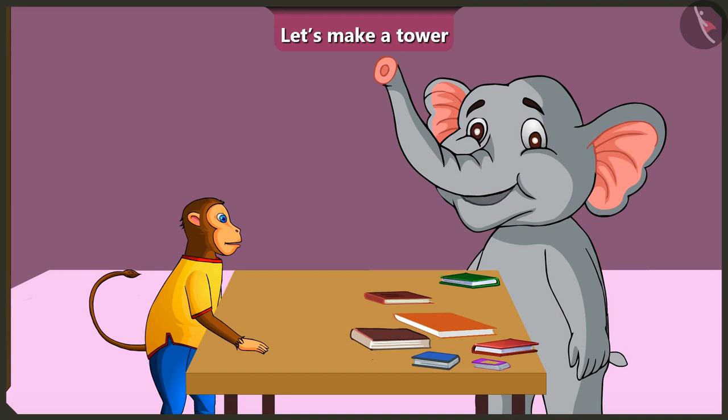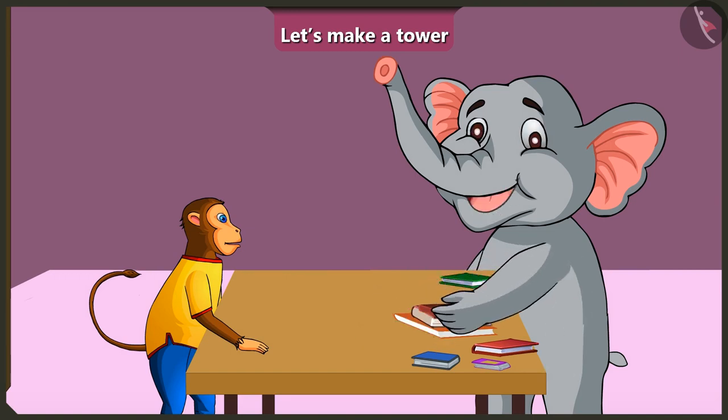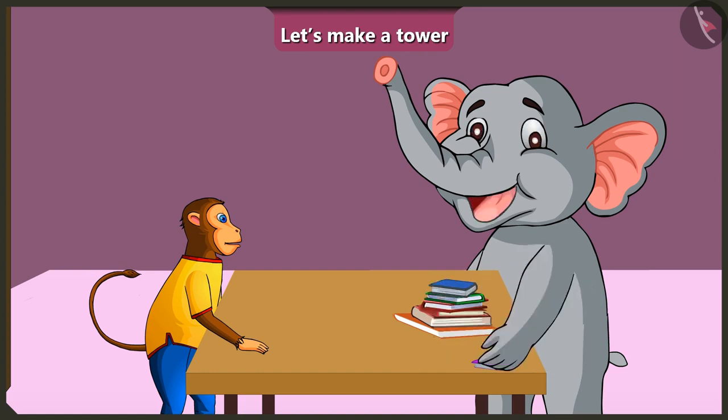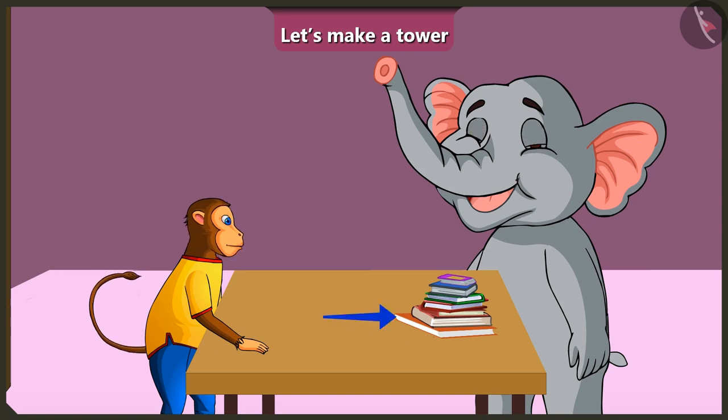Oh yes, now I understand that to build a tower, the bigger books should be placed at the bottom and the remaining books should be placed on top of them according to their size. Yes, the tower will gain stability, balance and strength with the big books kept at the bottom. It will support the weight of the small books.